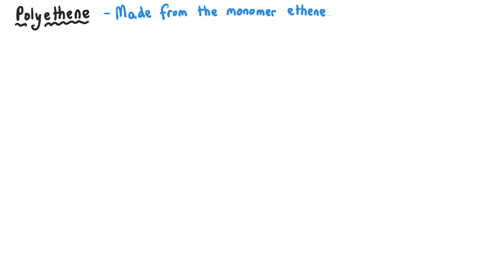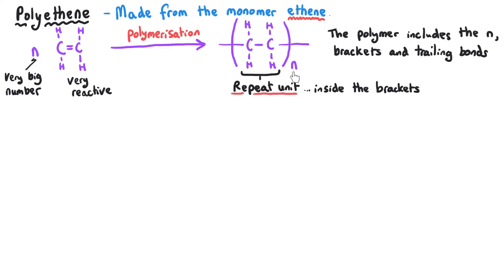In GCSE chemistry, there is one named example of a polymer that you need to know, and this polymer is polyethene, sometimes just referred to as polythene in day-to-day lives. Polyethene is made from the monomer ethene, and we have a huge number of these monomers, so huge but variable, we use the letter N to signify a very large number of this alkene. We know it's an alkene because it's got the C=C double bond as its functional group, and this double bond is very very reactive, and it can break partially and become a single bond, and then all of these monomers can join together in a big big long row that will repeat N times, where N is how many monomers have joined together. And what's inside the brackets is referred to as the repeating unit, and once we've got the brackets and the trailing bond and the N, that is referred to as the polymer.